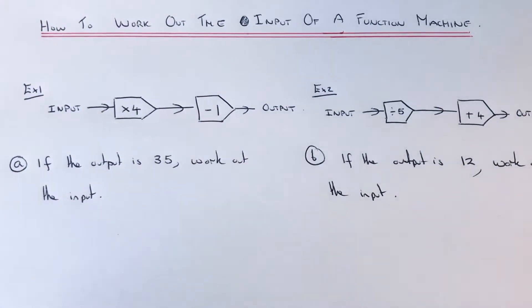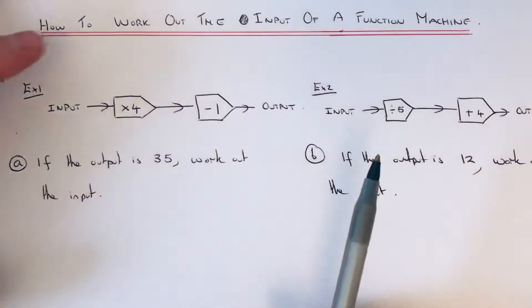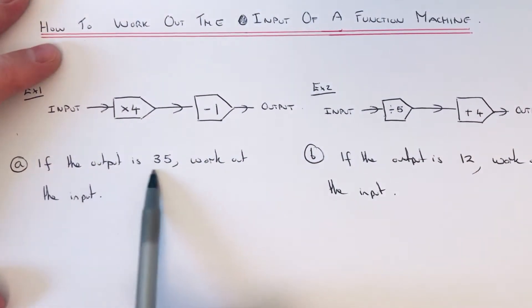Carry out the inverse operations in reverse order, so start at the end and work your way backwards to the start. Let's have a look at the first example. If the output is 35, work out the input.